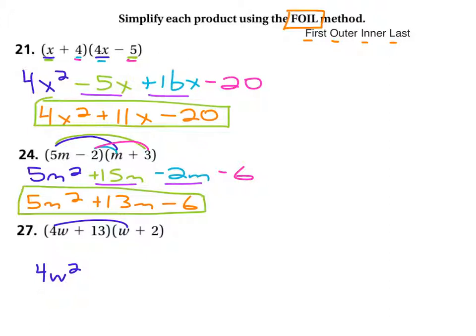4w times w is 4w squared. Outer. 4w times 2, 8w. And you see that what we did there is we essentially, just like we did in the distributive property in the early video, we took 4w and we multiplied both things from the second binomial by 4w. 4w times w and 4w times 2.